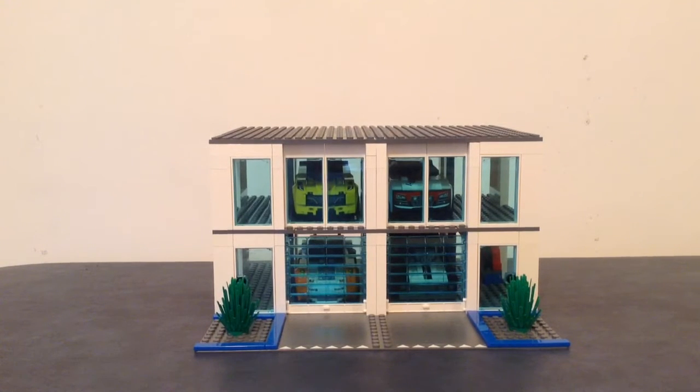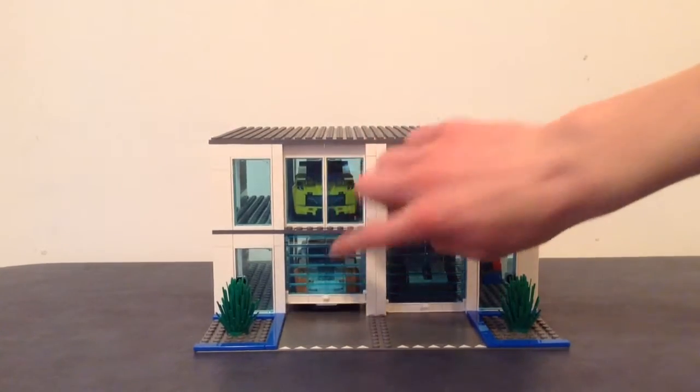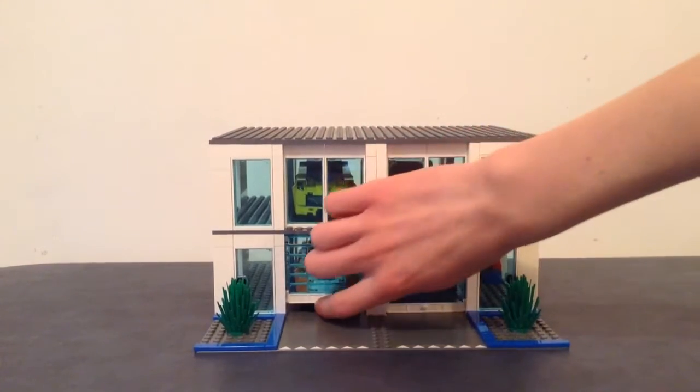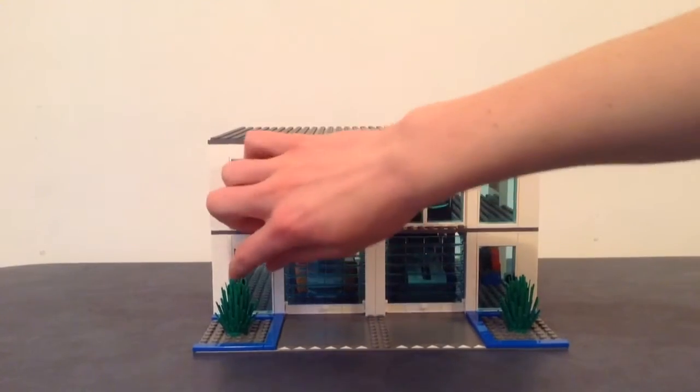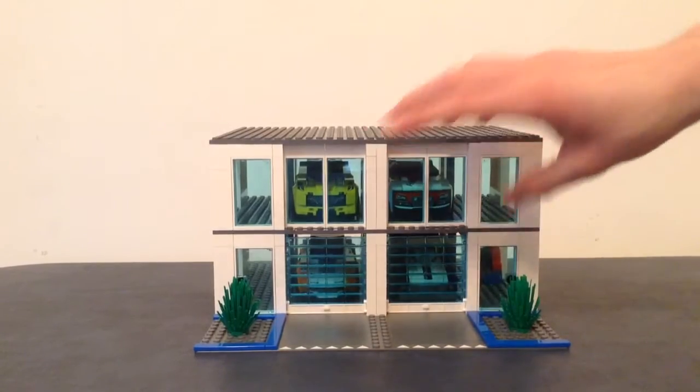As you can see out front there's some functioning garage doors and some side doors so that people can get inside and there's some nice little bushes out front.